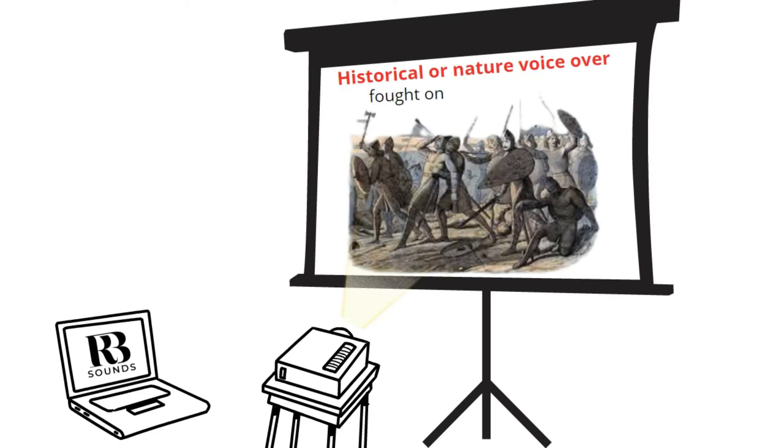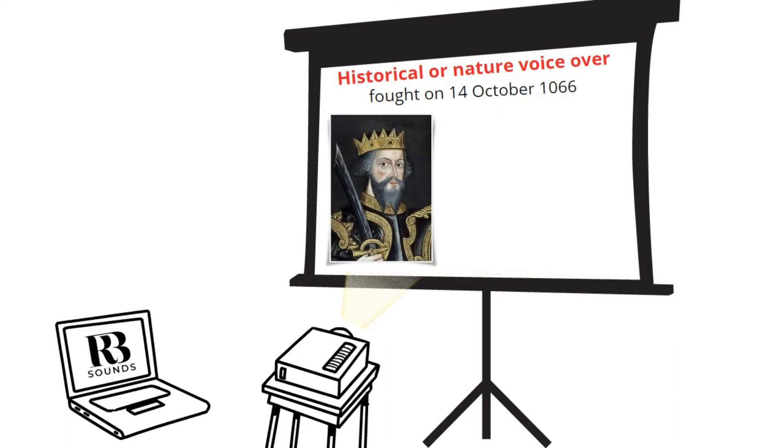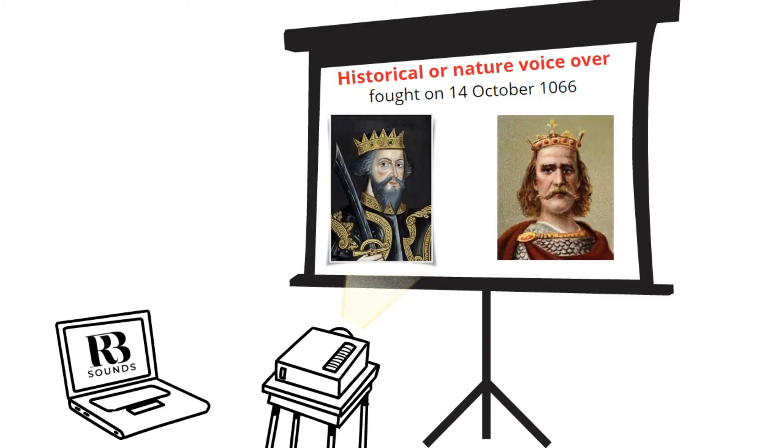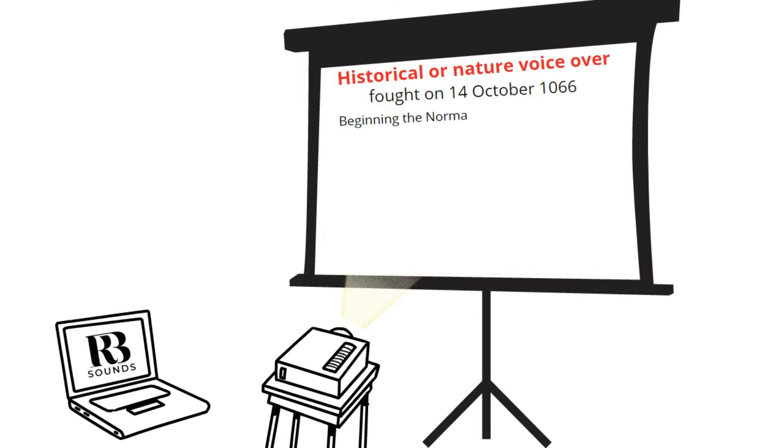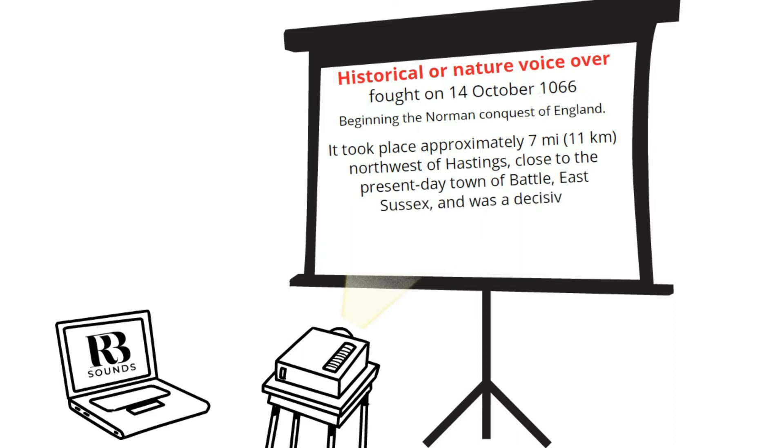Historical or nature voiceover: The Battle of Hastings was fought on 14th October 1066 between the Norman French Army of William, the Duke of Normandy, and an English army under the Anglo-Saxon King Harold Godwinson, beginning the Norman Conquest of England. It took place approximately 7 miles northwest of Hastings, close to the present-day town of Battle, East Sussex, and it was a decisive Norman victory.